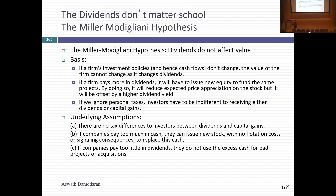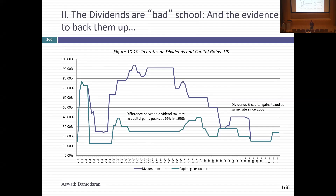The Modigliani-Miller school makes impractical assumptions — investors do care about taxes, capital markets have issuance costs, and raising new equity is four to five times more expensive than new debt. On the tax side, the purple line shows tax rates on dividends and the green line shows capital gains tax rates historically — look at the huge gap in the 1950s and 60s through 1970. Dividends were taxed at very high rates for the highest-income individuals, making capital gains far preferable from a tax perspective.